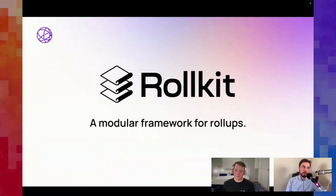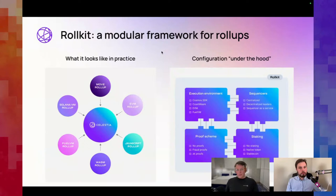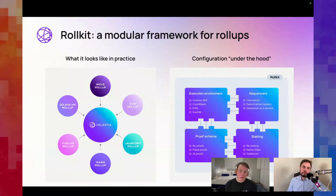Rollkit is the way you build this. Rollkit is a modular framework for rollups that allows you to build your own rollup on top of a shared security layer. Under the hood you can choose your execution environment — Cosmos SDK, EVM, CosmWasm, or Fuel VM. You can set up different sequencer configurations: centralized sequencer, decentralized leader selection, or sequencer-as-a-service. You can also configure staking options and different proof schemes — fraud proofs, zero-knowledge proofs, or no proofs at all.